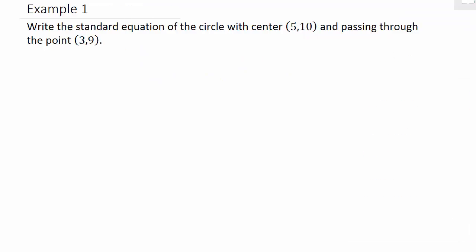Now let's look at our example. It says: write the standard equation of the circle with center (5, 10) and passing through the point (3, 9). We have the center, so we know that's h and that's k. We have everything but r, so we need to find what r is.